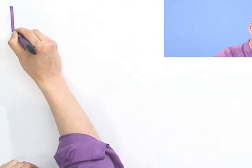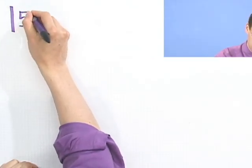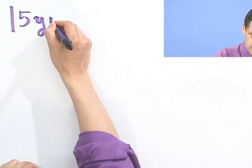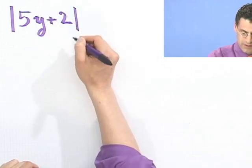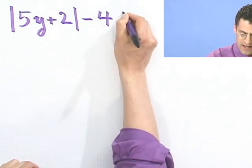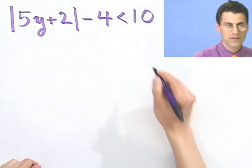This one is going to look a little different. Absolute value 5y plus 2, and then you subtract off 4, and that has to be less than 10. So that's the question.